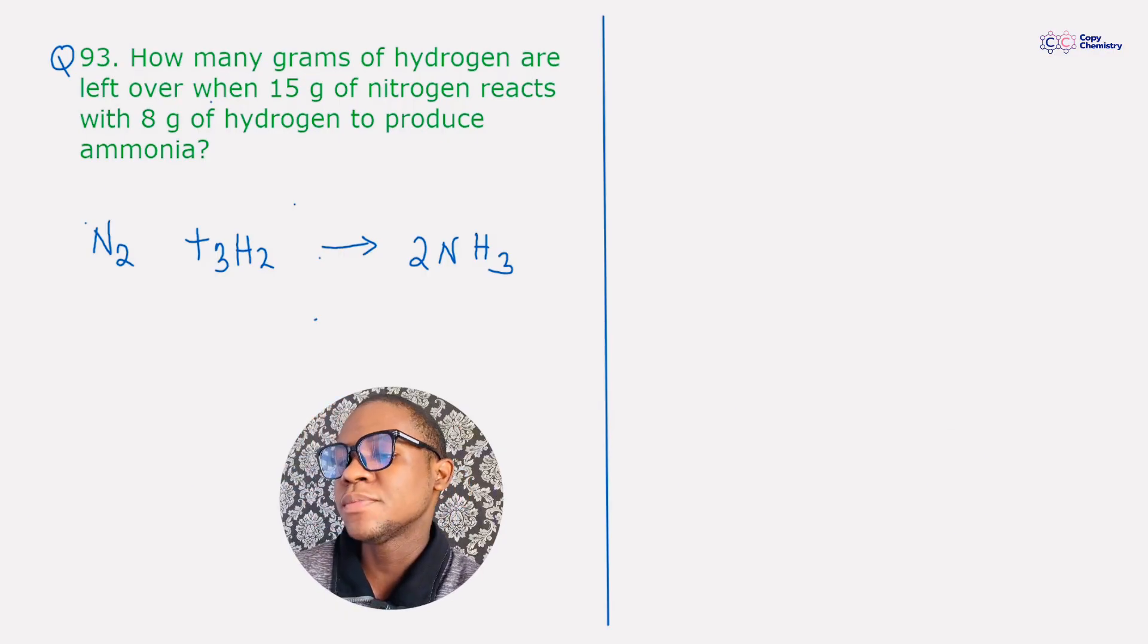So this is getting interesting. How many grams of hydrogen are left over? They've already told us here that the hydrogen is the excess reagent, and that would just imply that the nitrogen is our limiting reagent. Does that make sense?